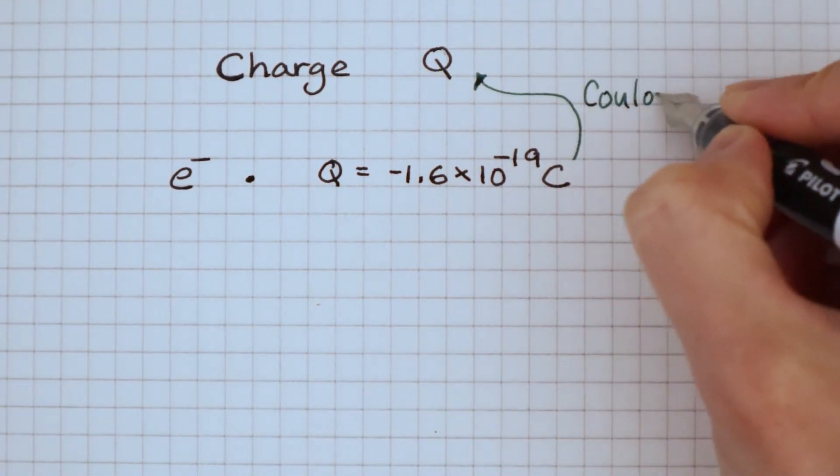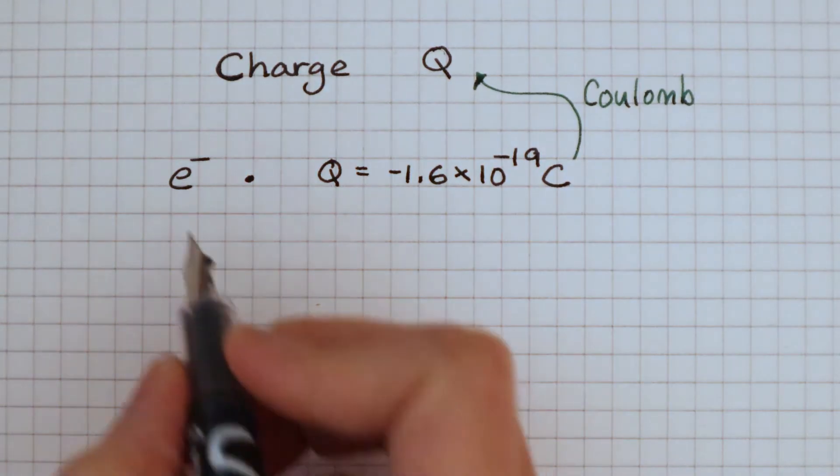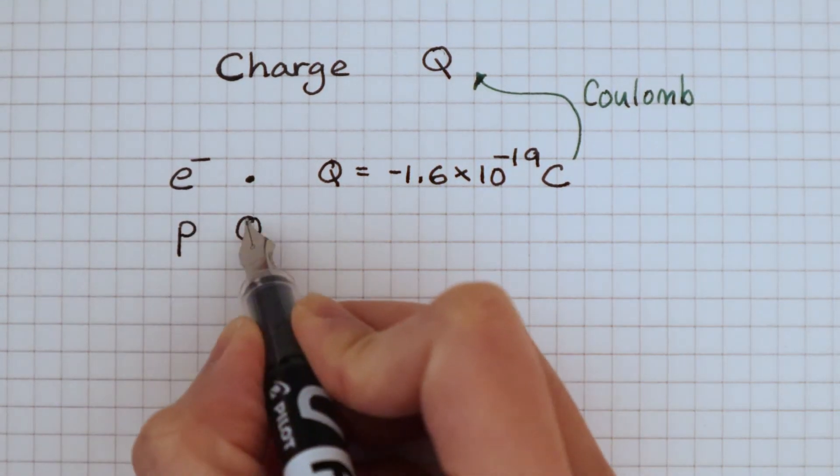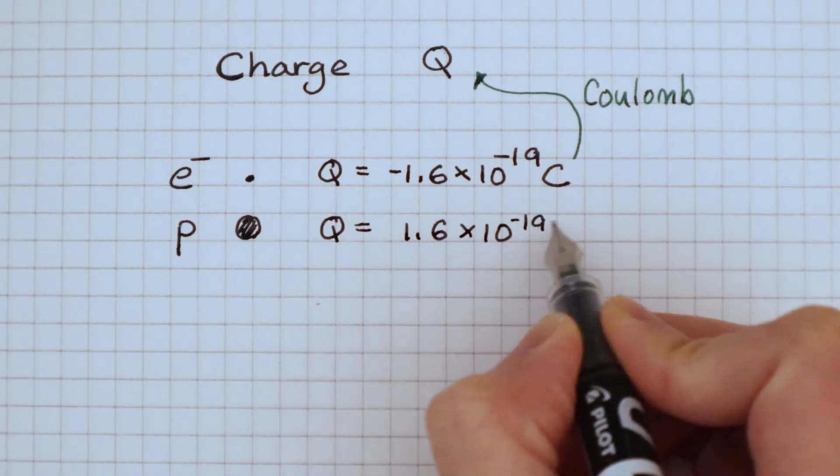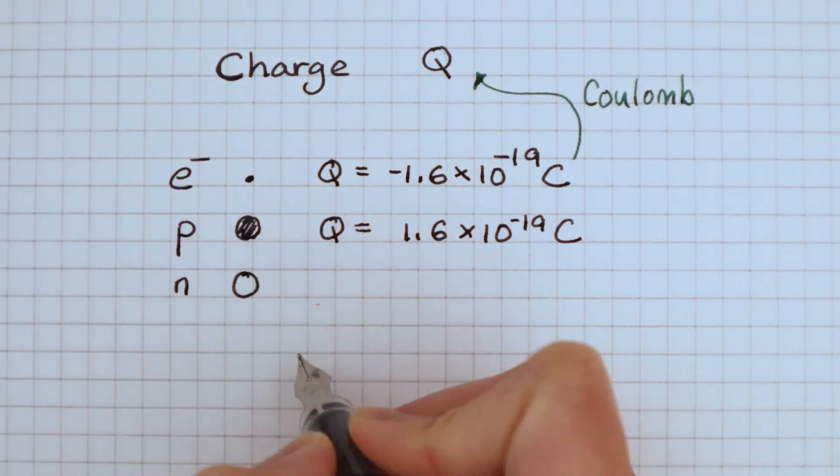Coulombs is a unit of charge. The symbol for coulomb is capital C. A proton has a positive charge of the same number, and a neutron simply has no charge.